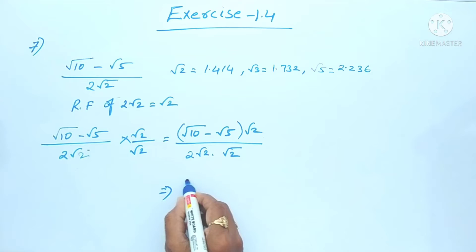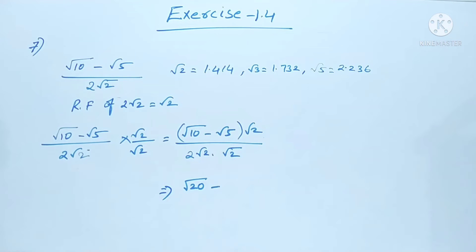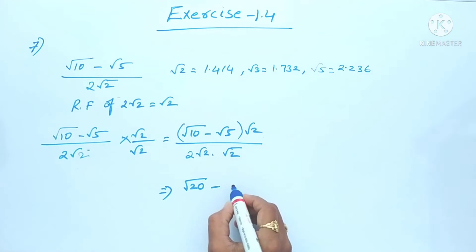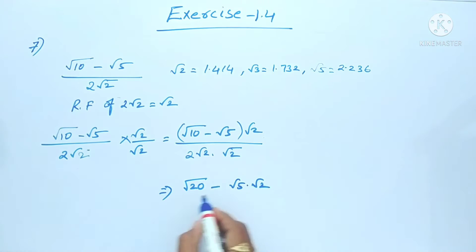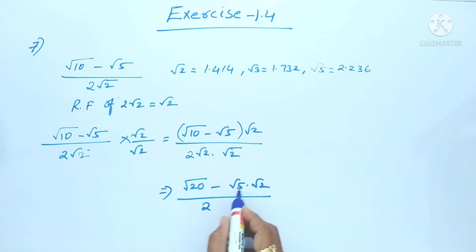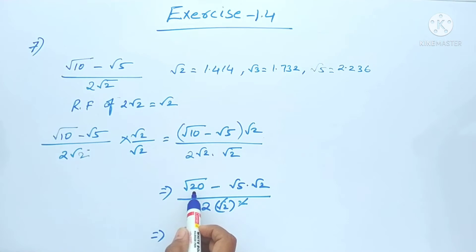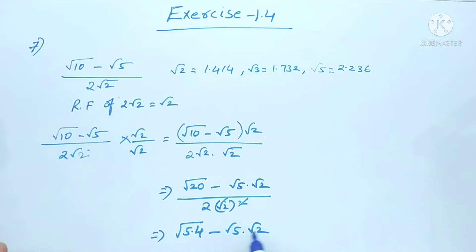So √2 × √10 gives √20 in the numerator. In the denominator, 2√2 × √2 = 2 × (√2)² = 2 × 2 = 4. Now √20 can be written as √(5 × 4), so the numerator becomes √5 × √4 - √5 × √2, over 4.